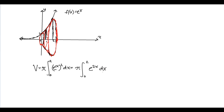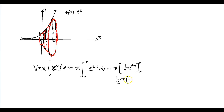So we have volume equals π times the integral from 0 to 2 of e to the 2x dx. This is a pretty easy integral. This is 1/2 — you can just use a u-substitution with u equals 2x. So 1/2 times e to the 2x, with 2 and 0 as your limits of integration. So we can pull this 1/2 out because it's a constant. So 1/2 π times e to the 2×2 which is 4, minus e to the 0 which is 1. And this is the exact volume of this solid.